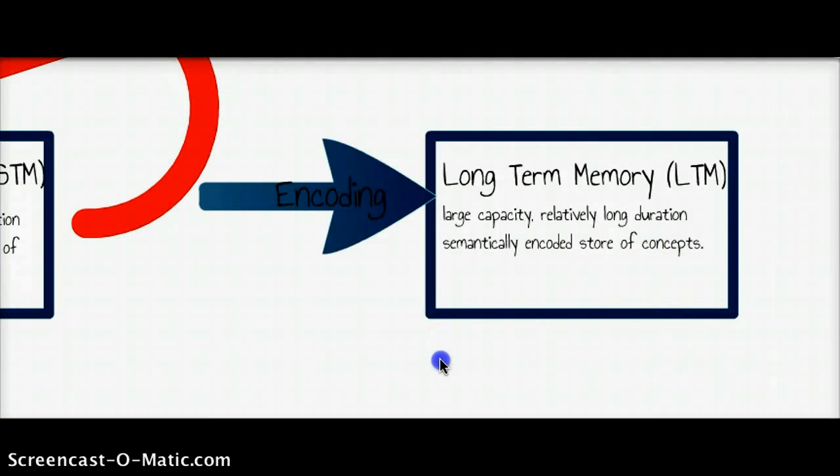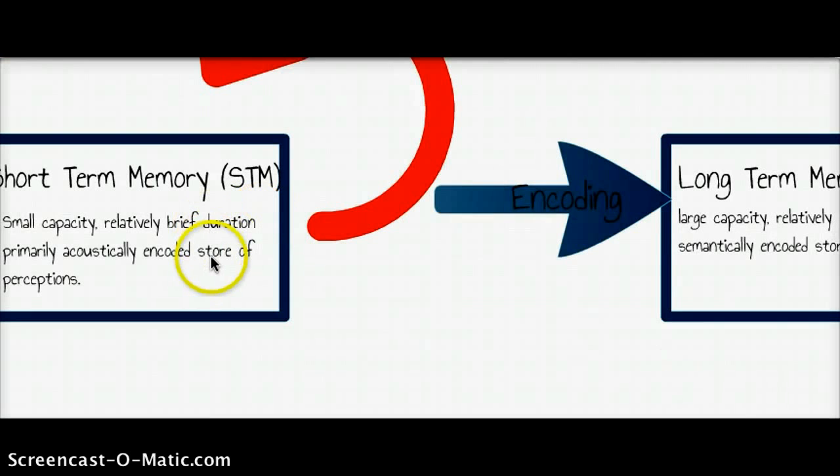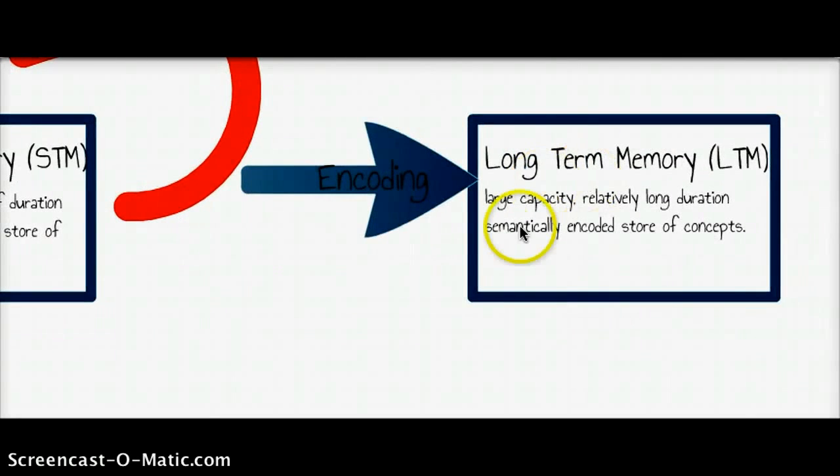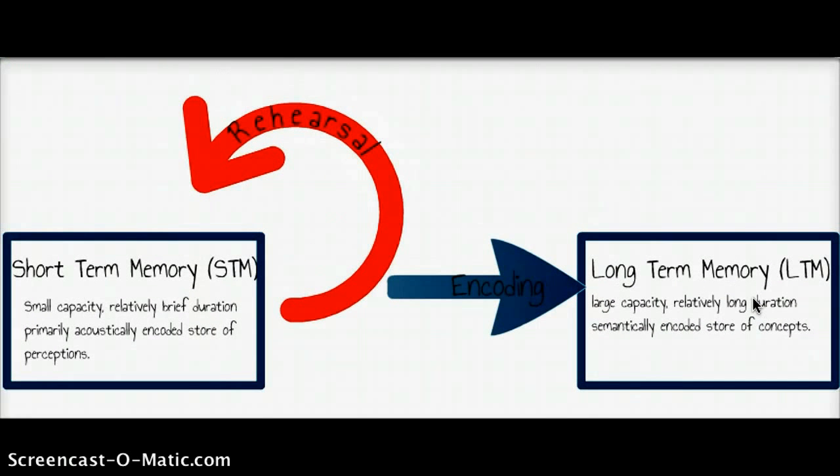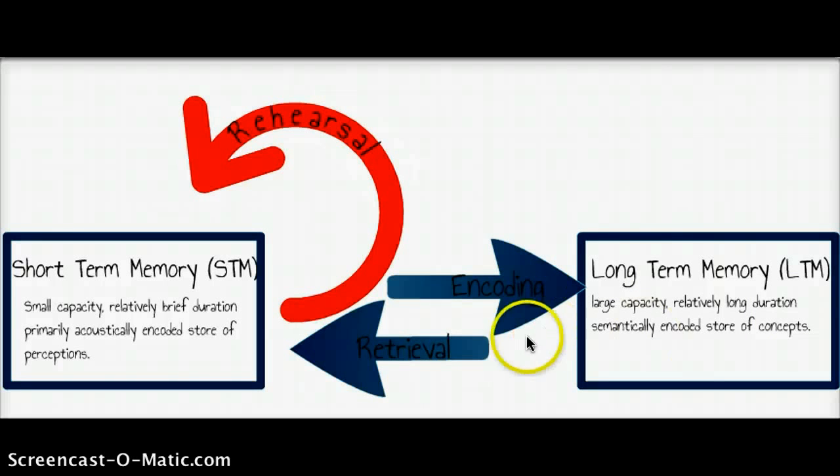Now of course, once it's stored in long-term memory, because short-term memory is the space in which we handle stuff that we're working on at the moment, there has to be some mechanism to get us from long-term memory back to short-term memory again, and that process is called retrieval. The retrieval process, separate from the encoding process - these two processes that link short and long-term memory.